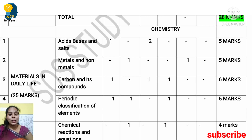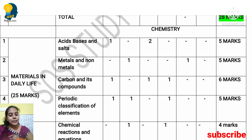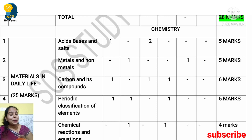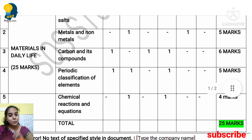In a previous year, Chemical Reactions and Equations was deleted, so the marks were redistributed — Metals and Non-Metals got extra marks and Periodic Classification of Elements got 7 marks that year. This year Chemical Reactions and Equations is back, so the marks have been reshuffled: Metals and Non-Metals gets 3 marks and Periodic Classification gets 2 marks adjusted accordingly to keep everything balanced.